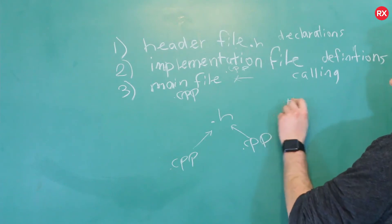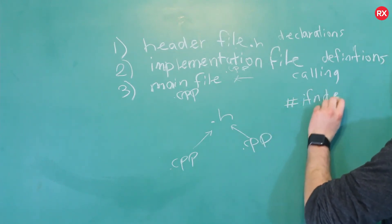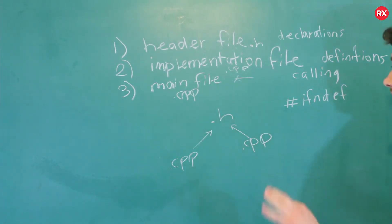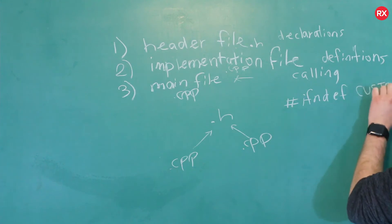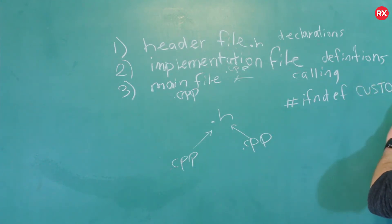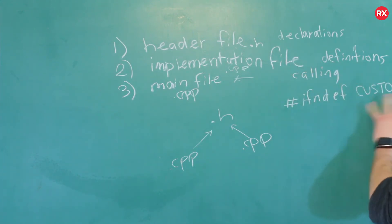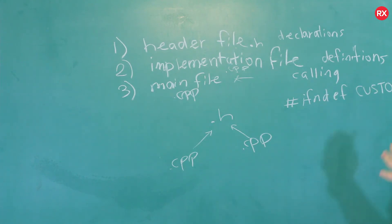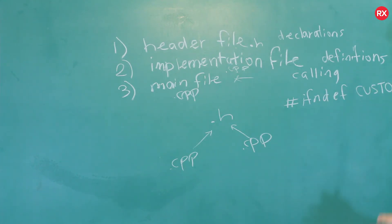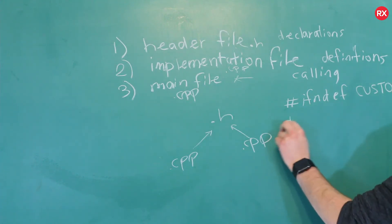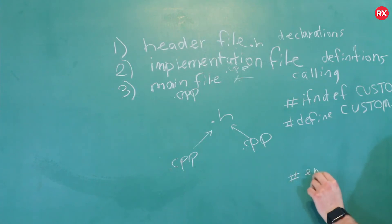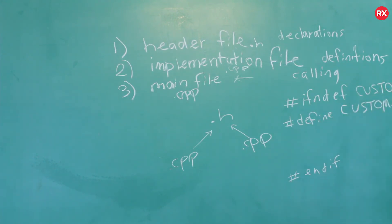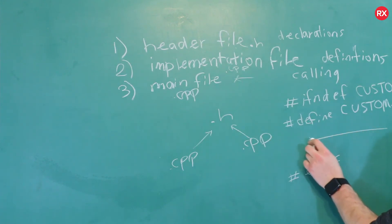At the beginning of your file, you put a pound sign and say #ifndef — if not defined — and then you make up some name. That name can be whatever, but usually it's the same as the file name in all caps, like CUSTOM_H, just to make it unique. The preprocessor will look at this, see if it's been included already, and if not it will proceed. So if it's not defined, we then define it with #define. And at the end of the entire header file, we close it with #endif. Everything that goes in the header file goes in between these lines of code.